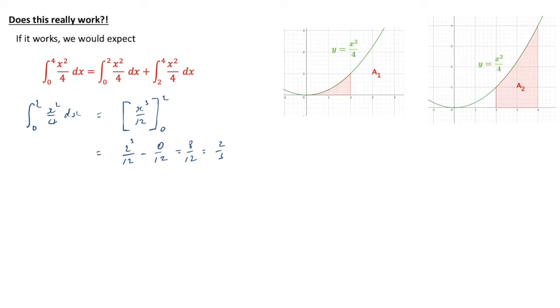We then want to work out the area between 2 and 4. So, similar job, we now have between 2 and 4 for x squared over 4 dx, and that's going to be x cubed over 12 in the square bracket with 2 at the bottom and 4 at the top. When we work that out, we've got our 4 cubed over 12, take away 2 cubed over 12, which is 64 over 12, take away 8 over 12, which is 56 over 12, which is 14 over 3.